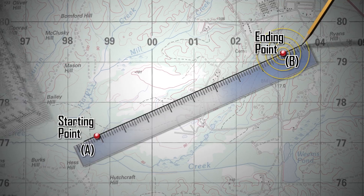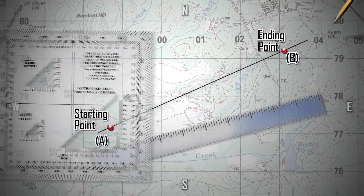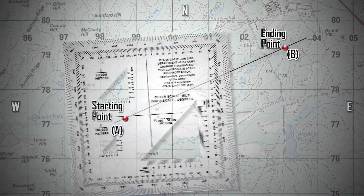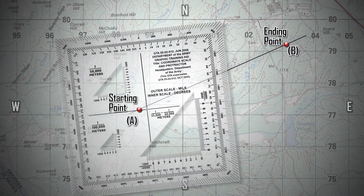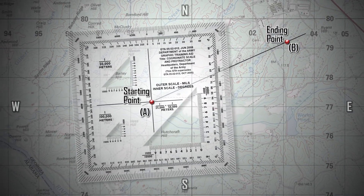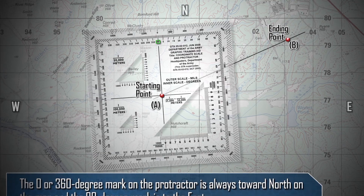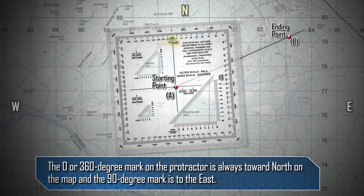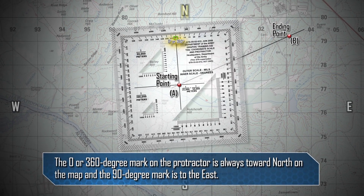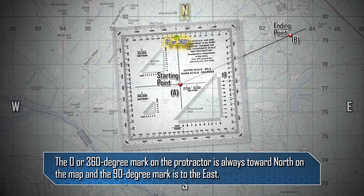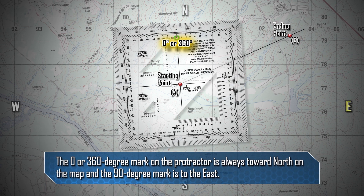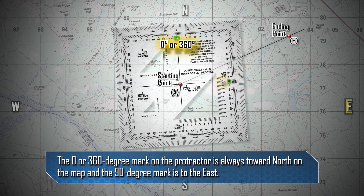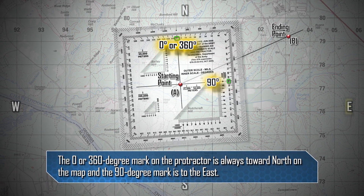Place the protractor index over the starting point on the map. The 0 or 360-degree mark on the protractor is always toward north on the map, and the 90-degree mark is to the east.